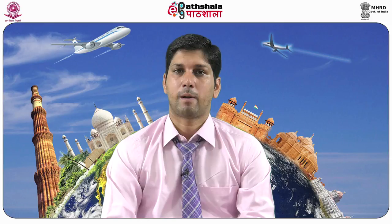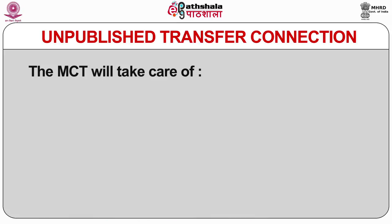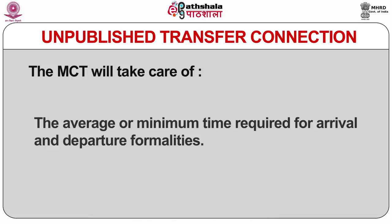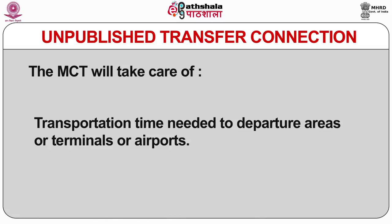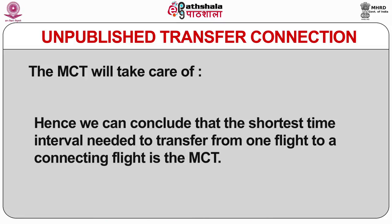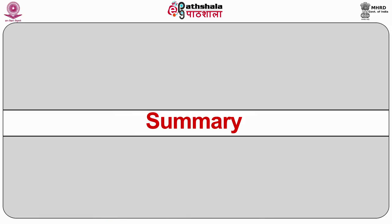Minimum Connecting Time depends on the carrier used, connecting points, terminals used, and sometimes the class of journey. Information on minimum connecting time is available in the journal information section of the OAG under the head 'Minimum Connecting Time.' It accounts for the average time needed for arrival and departure formalities, walking distance, and inter-airport transfer time from arrival to departure areas. In conclusion, the minimum connecting time is the shortest time interval needed to transfer from one flight to the connecting flight.